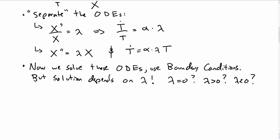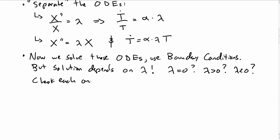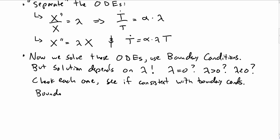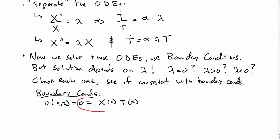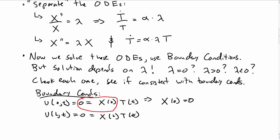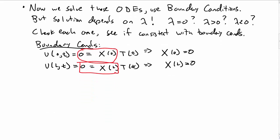For each case, we check whether the solution is consistent with our boundary conditions. The boundary conditions are u(0, t) = 0 and u(L, t) = 0. Since u = X(x)T(t), and T(t) can't be zero for all time, these reduce to X(0) = 0 and X(L) = 0. These are the boundary conditions we impose on X(x).